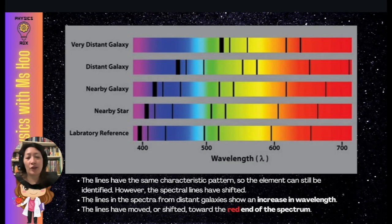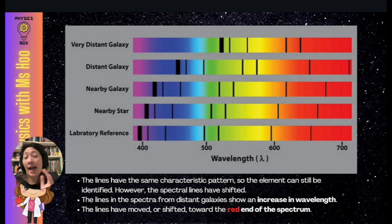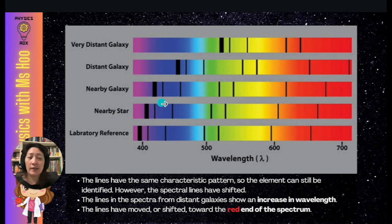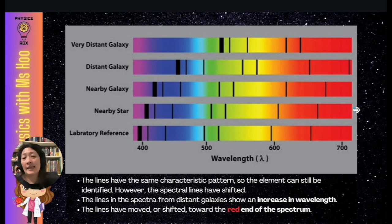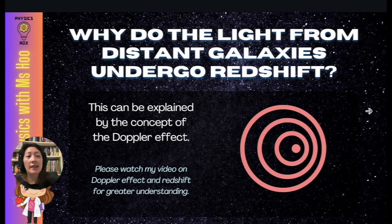Now that we know what red shifting is, we can compare the distances of various galaxies. Comparing the absorption spectra of stars from different galaxies, the lines have the same characteristic pattern — so elements can still be identified — but the spectral lines have all shifted towards the red end of the spectrum. The more distant the galaxy, the greater the increase in wavelength and the more the lines have shifted towards the red end, meaning greater distance corresponds to greater red shift.